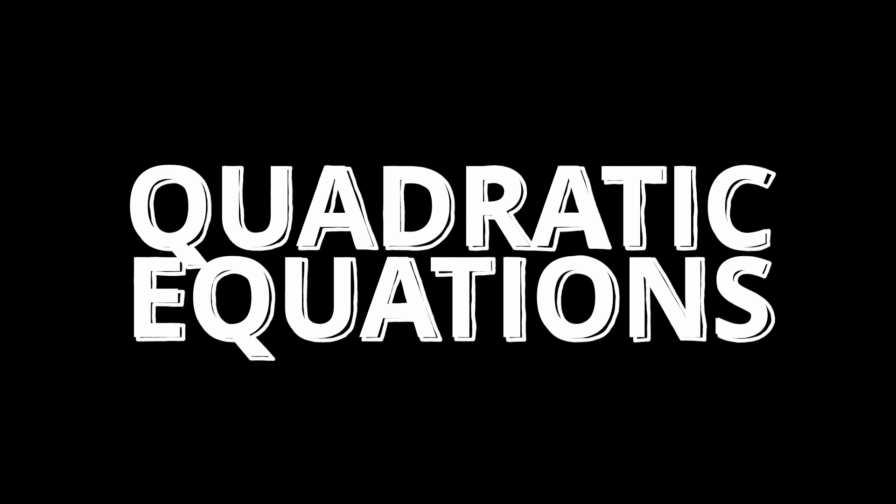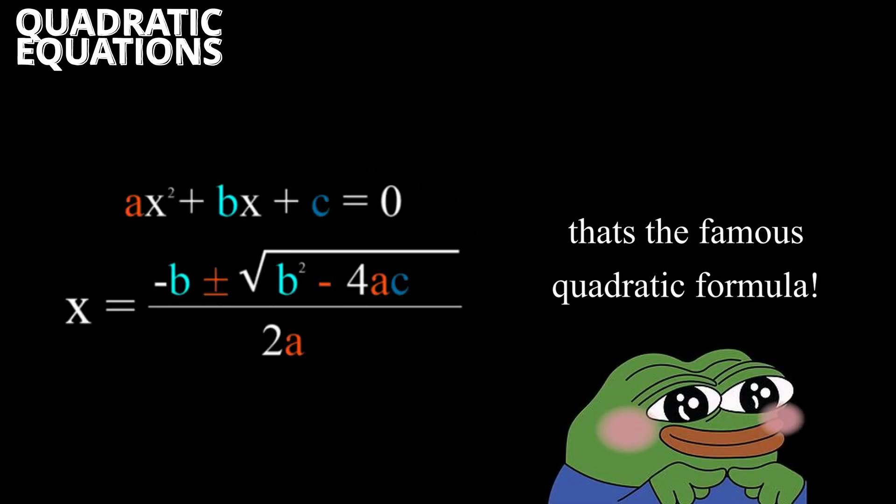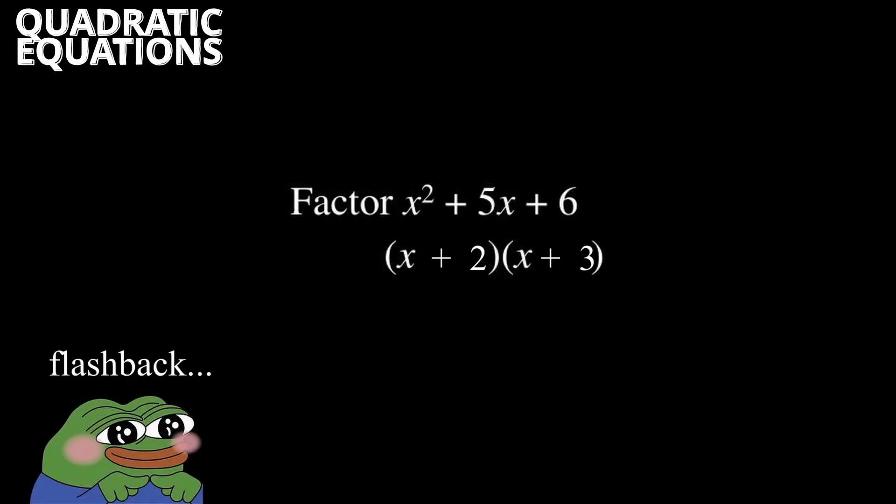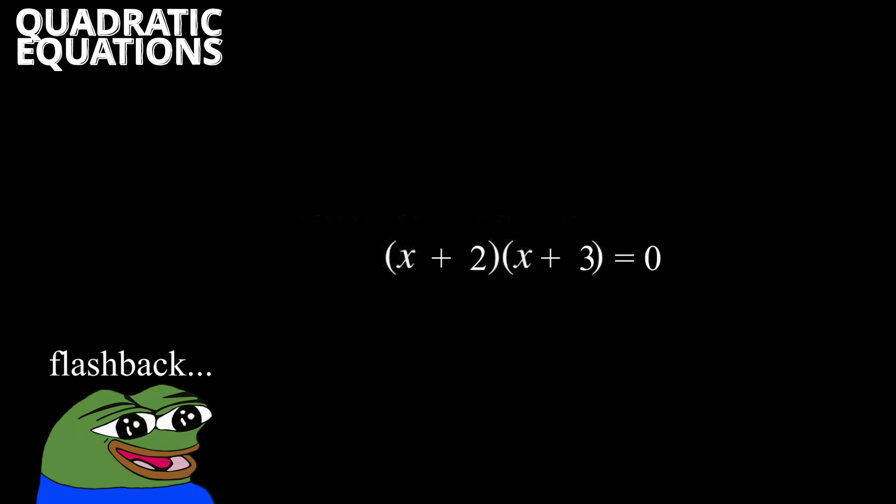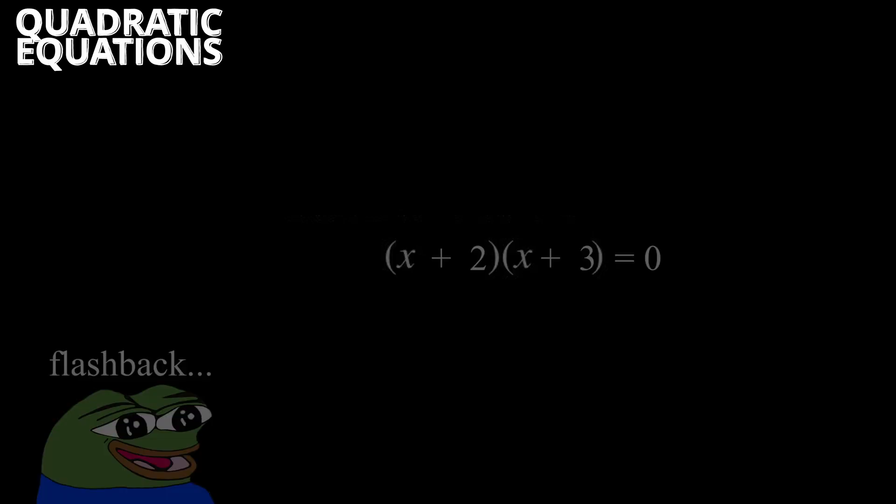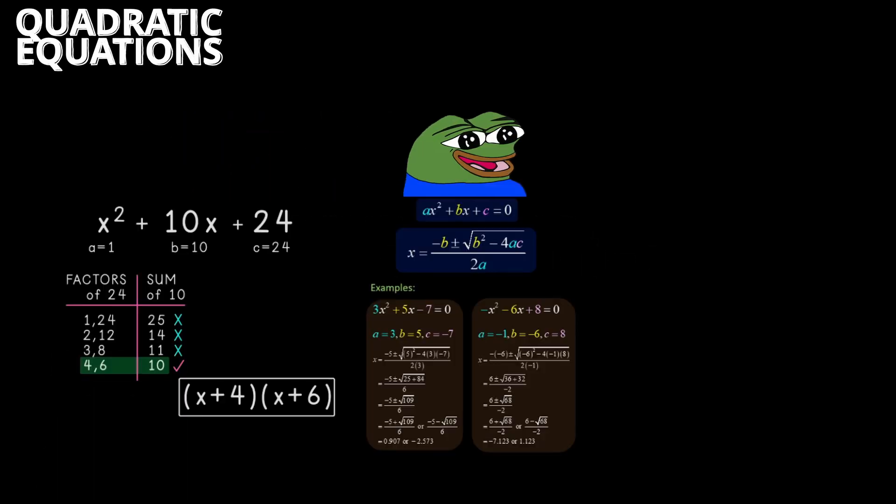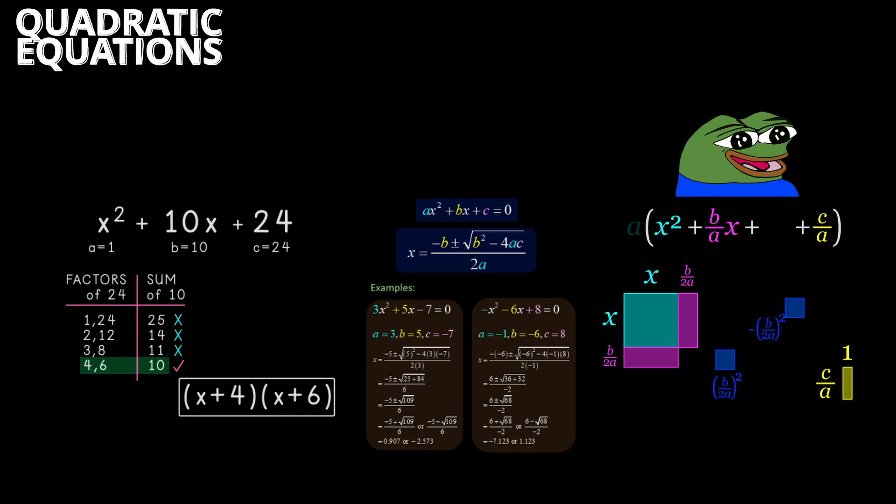Quadratic Equations. A quadratic equation is an equation that includes x squared. x squared plus 5x plus 6 equals 0. There are different ways to solve these, like factoring, using the quadratic formula, or completing the square.